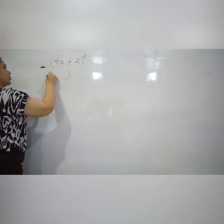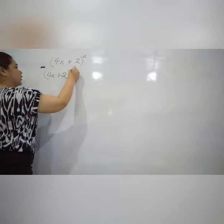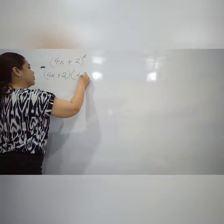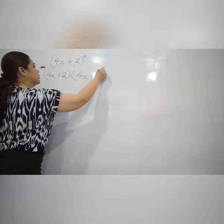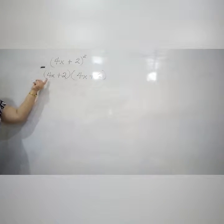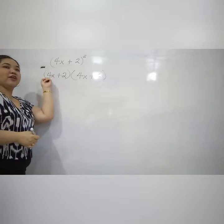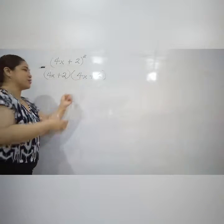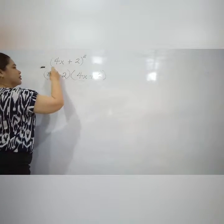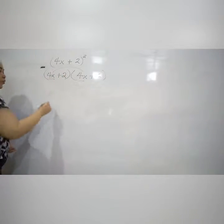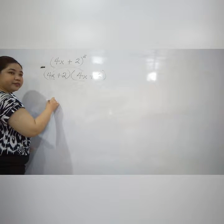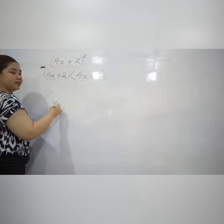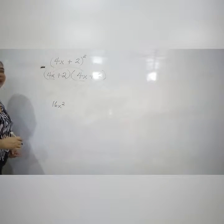4x plus 2, that's what it means. Okay, so what are you going to do first? The first term. Correct. What is the result? 16x squared. Okay.